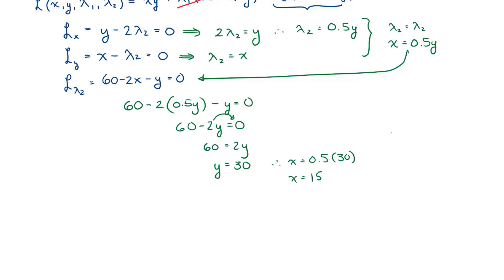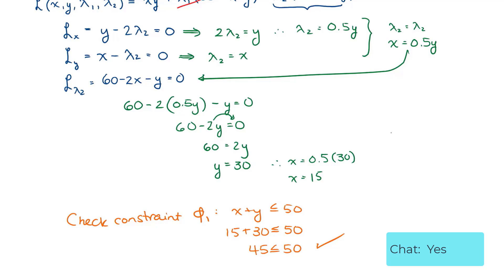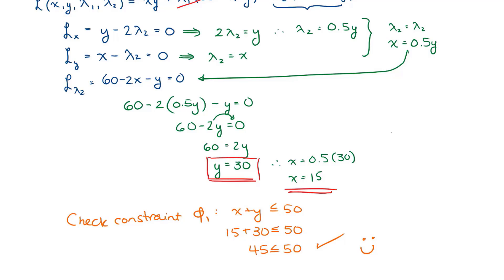Before accepting this solution, I need to check the assumption that constraint 1 was naturally satisfied. Constraint 1 is x plus y is less than or equal to 50. Substituting in: 15 plus 30 equals 45, and 45 is less than or equal to 50. Yes, the constraint is satisfied — 45 is less than 50. The problem is solved: x equals 15 and y equals 30.